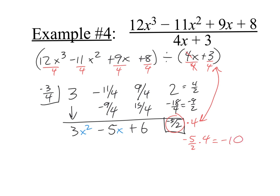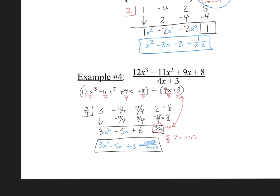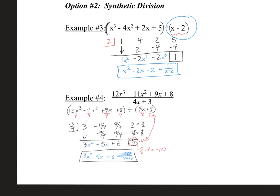So the correct answer is 3x² minus 5x plus 6 minus 10 over (4x plus 3), since the real remainder is negative 10. You can see why I don't love synthetic when the leading coefficient isn't 1 — you have to divide everything, deal with fractions, and then multiply the remainder back at the end. But now you've seen both ways to do it. That's it for this video — see you on the next one.